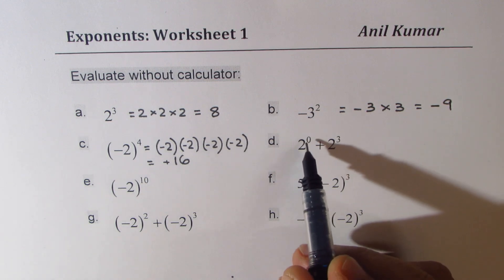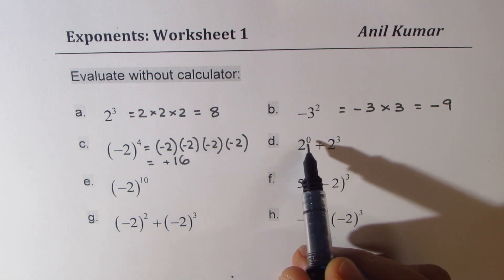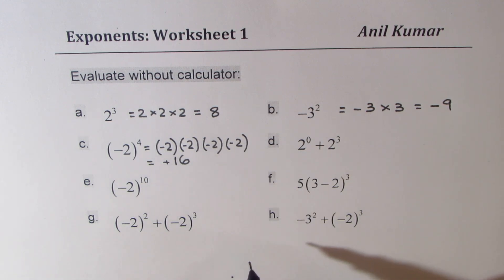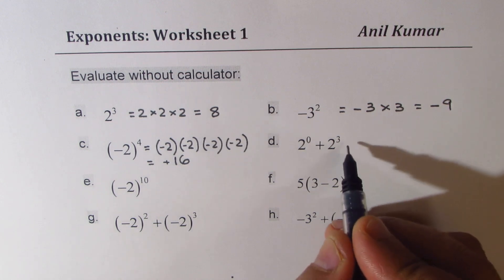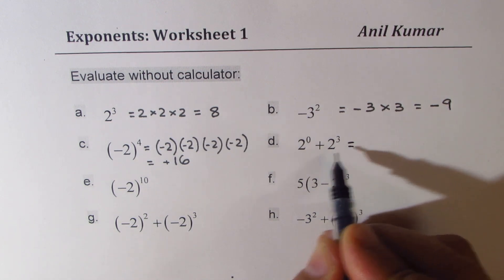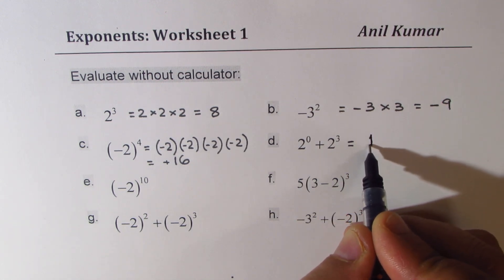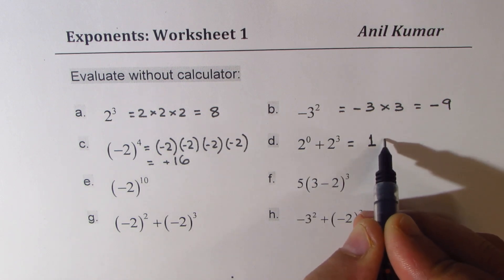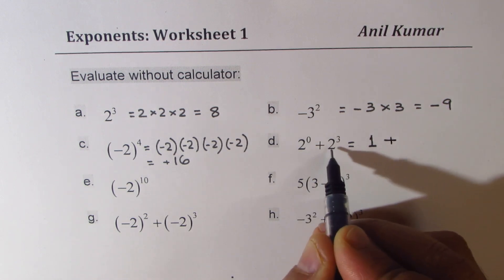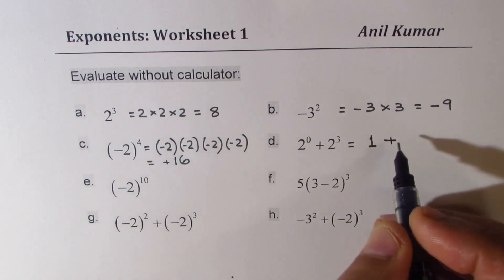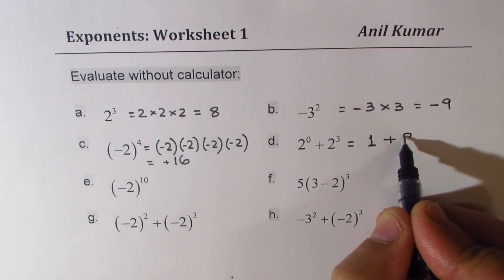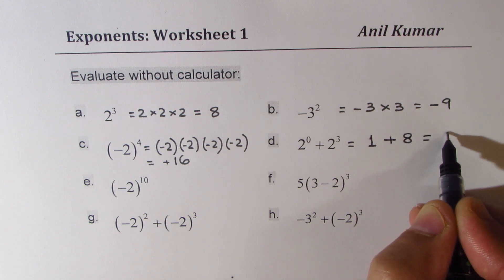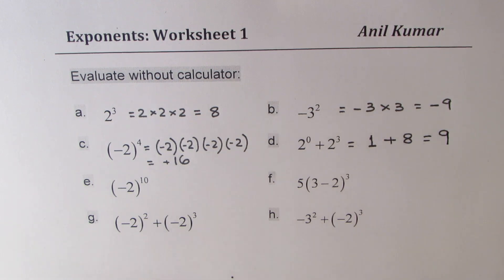Now we have 2 to the power of 0. Anything to the power of 0 is very important to know — anything to the power of 0 is just 1. So 2 to the power of 0 is 1, plus 2 cubed which we just learned is 8. So we add 1 to 8 and get the answer as 9, which is 3 squared.